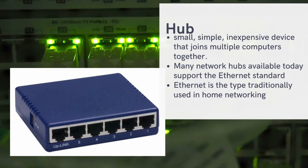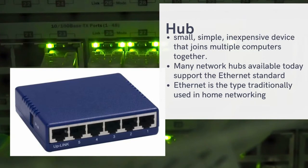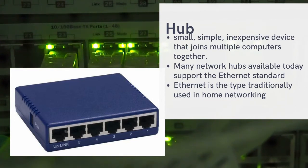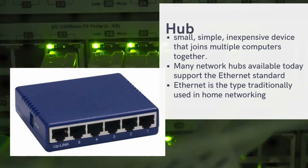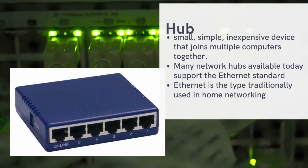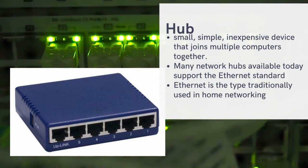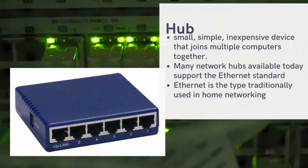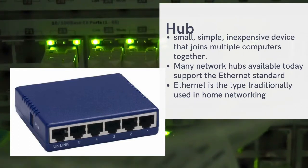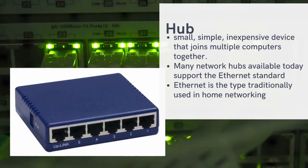The disadvantage of the hub is that it replicates data. The data from Computer A should only go to Computer B, but all connected computers receive it. The hub cannot prevent this data traffic — it cannot route data to a specific destination. That is why they say the hub is unintelligent.